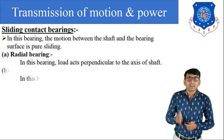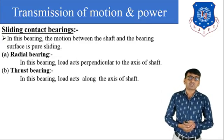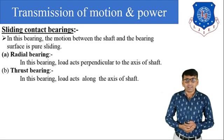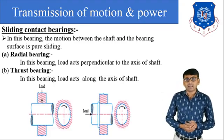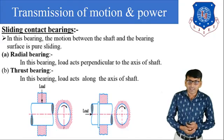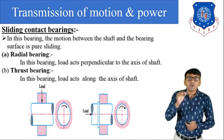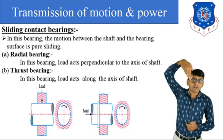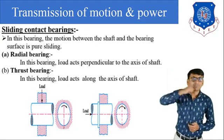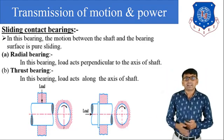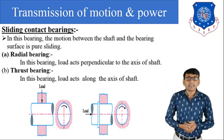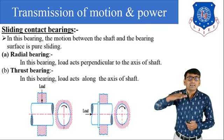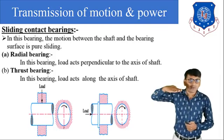In sliding contact bearing, there are two subtypes: first, radial bearing, in which the load acts perpendicular to the axis of the shaft; and second, thrust bearing, in which the load acts along the axis of the shaft. The first diagram shows a radial bearing and the second diagram shows a thrust bearing.